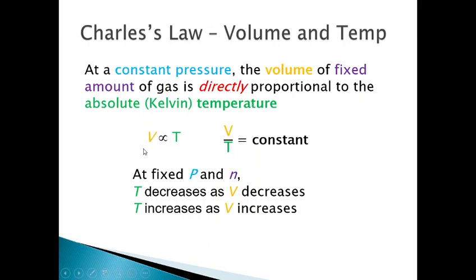If volume goes up, temperature has to go up as well. If volume goes down, temperature has to go down as well. Because these are a linear relationship, isolating volume and temperature on one side gives you volume divided by temperature equals some constant at a fixed pressure and fixed moles.